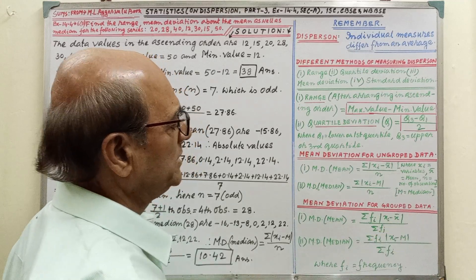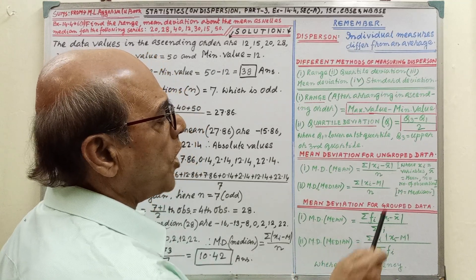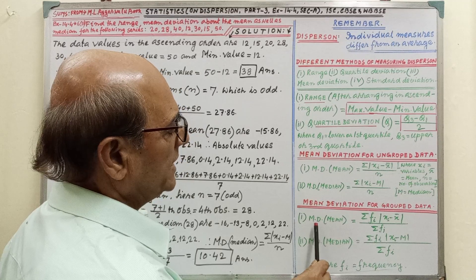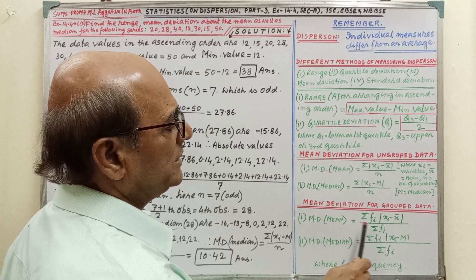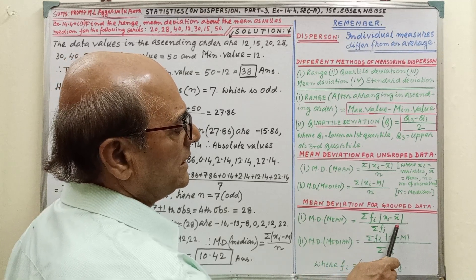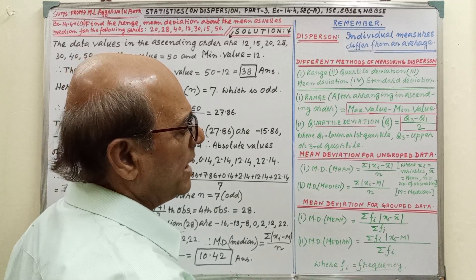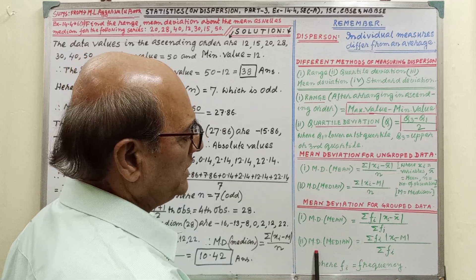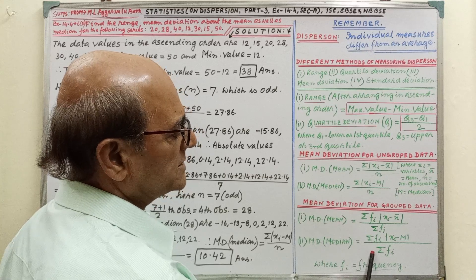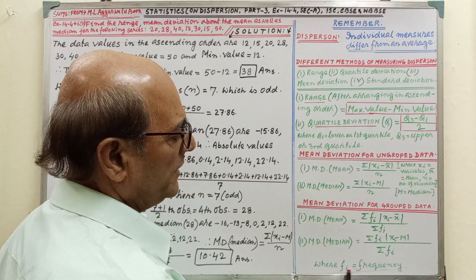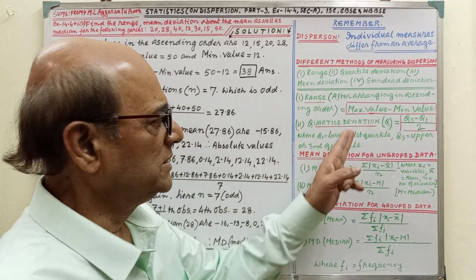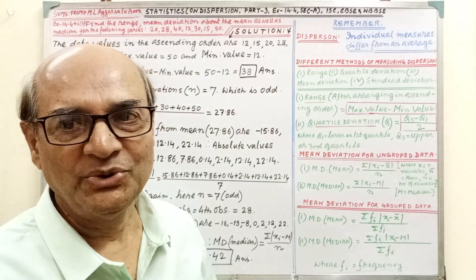Mean deviation for grouped data, that is mean deviation mean equal to sigma fi times xi minus mean mod by sigma fi, and mean deviation median, that is sigma fi times xi minus m mod by sigma fi, where fi equal to frequency. This formula you have to remember.